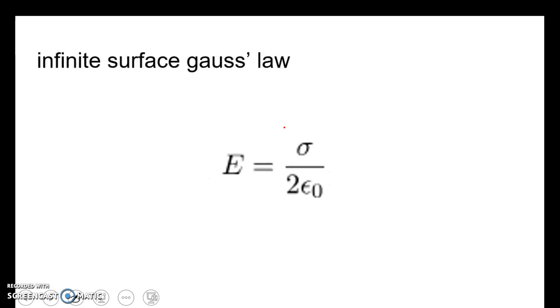And then lastly, for an infinite surface, Gauss's Law becomes this equation. Once again, a new symbol has been added just like the one before. This is sigma, which is just the charge per unit area. So once again, it's just a way to give a value of charge. Thank you.